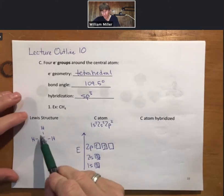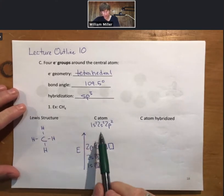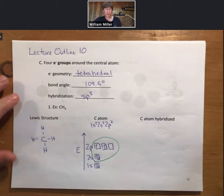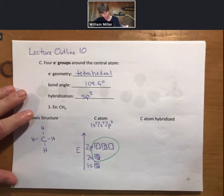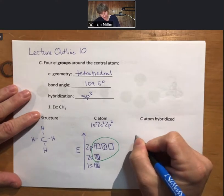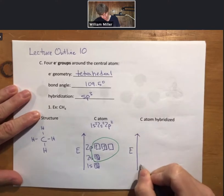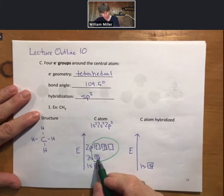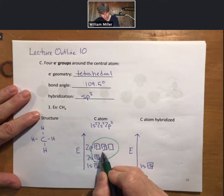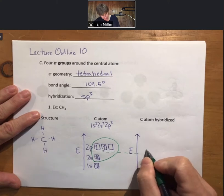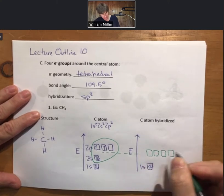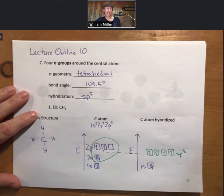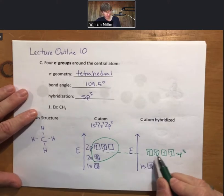We know the answer already: there are four electron groups, so there are four hybridized orbitals. Since there will be four bonds, we are also circling four electrons. On the carbon atom hybridized area, nothing changes about the 1s. The 2s and 2p are averaged together to give four sp3 hybridized orbitals, each with one electron in them.